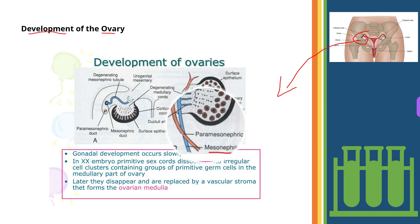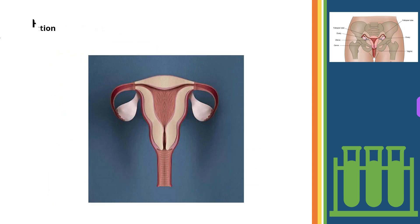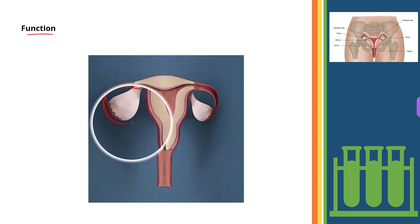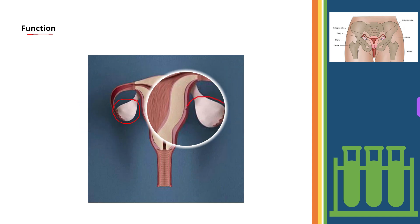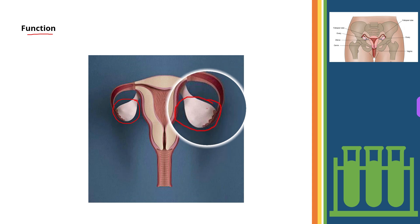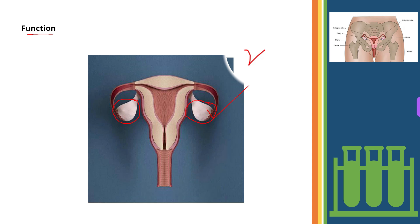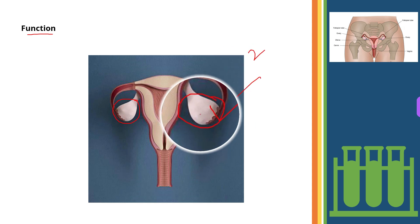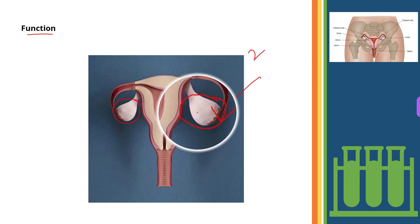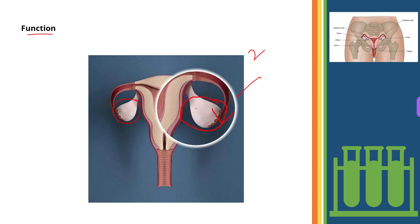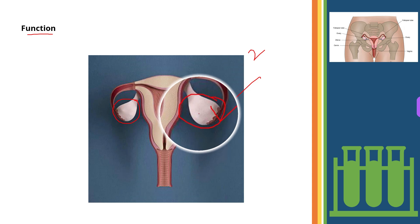Now, what are the functions of the ovary? Basically there are two functions of the ovaries. The first function is the maturation and release of the female gametes, that is ova, in a periodic manner. The second function is the secretion of the female sexual hormones, that is estrogen and progesterone.